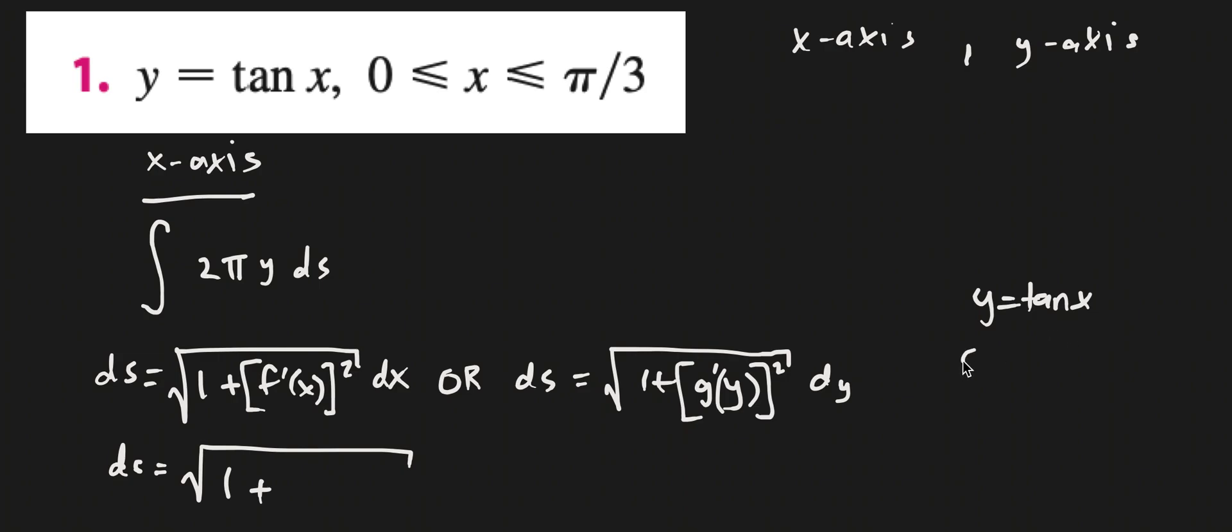dy/dx or y' is equal to secant squared x. So this is just going to be secant squared x, but then we square it dx. So this is just equal to ds is equal to root 1 plus secant to the fourth x dx.